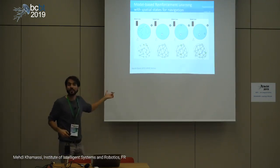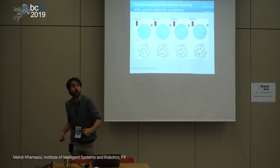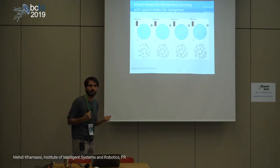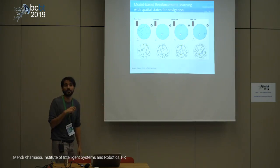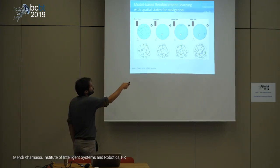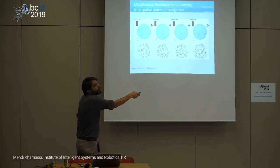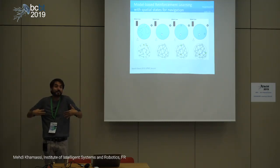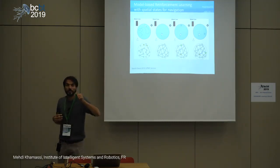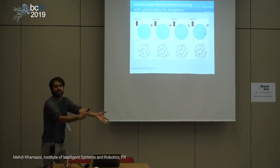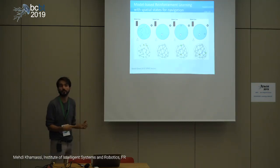One limitation is that this strategy produces slow decision-making — if the world is big, you need a lot of time to find the shortest path. But one advantage is that you can adapt very fast to a change in the environment. If the platform is moved, one trial is sufficient — you experience the absence of platform here, presence there, update your graph, rethink, and immediately have appropriate behavior. It predicts the vicarious trial-and-error phenomenon.